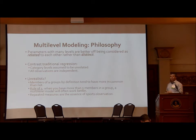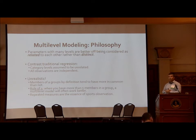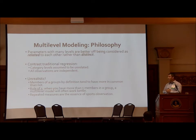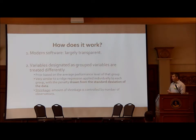Generally speaking, there's something called the rule of five: once you get about five members in a group, a multi-level model will often start working better. Not always — there are certain groups that even with large numbers have distinct qualities, like stadiums, so you have to be careful. But generally, the multi-level model starts to perform better, at least on baseball data, when we get there.